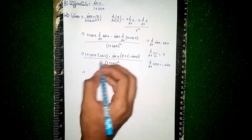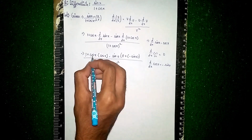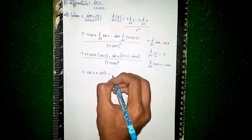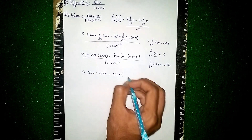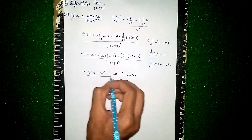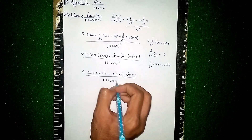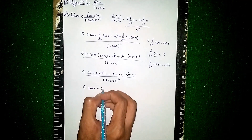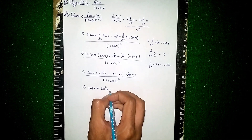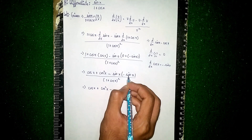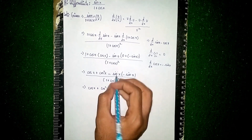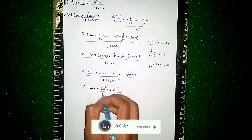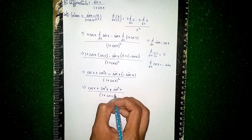Now multiply out: 1·cos(x) plus cos(x)·cos(x) gives cos²(x). Then minus sin(x) times (−sin(x)): the two negatives multiply to give a positive, so we get plus sin²(x). The numerator is cos(x) + cos²(x) + sin²(x), divided by (1 + cos(x))².